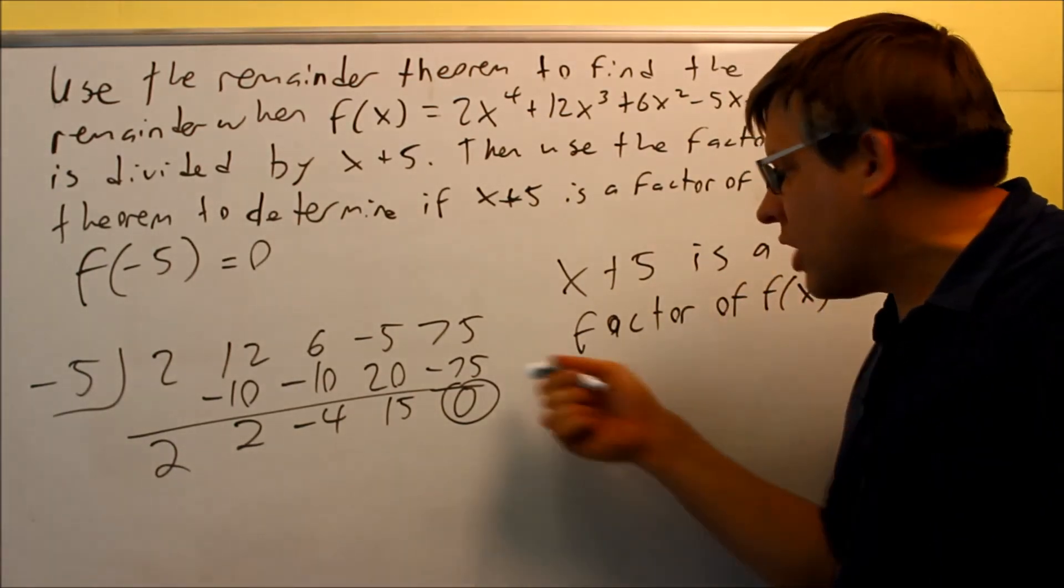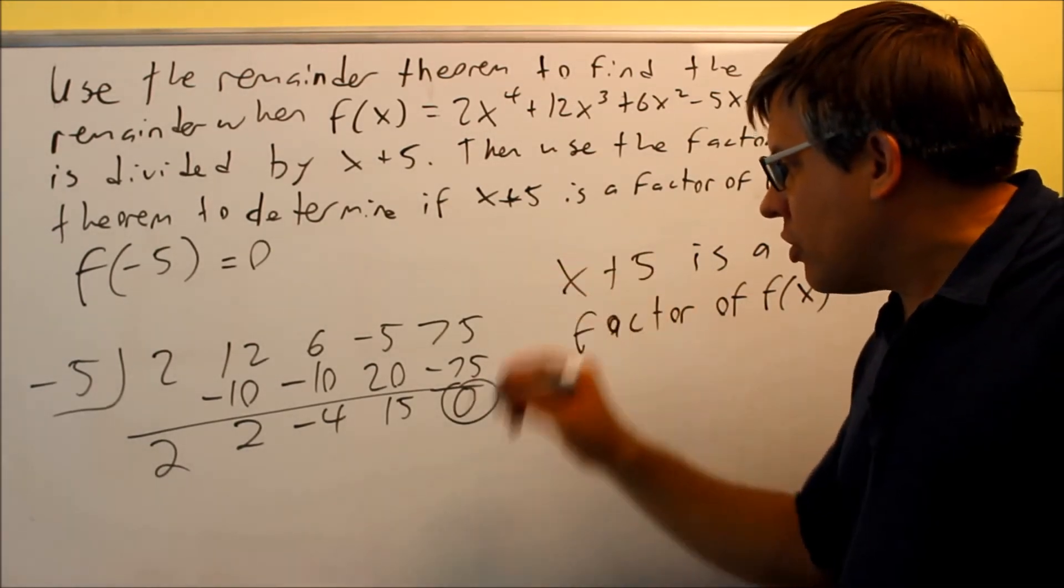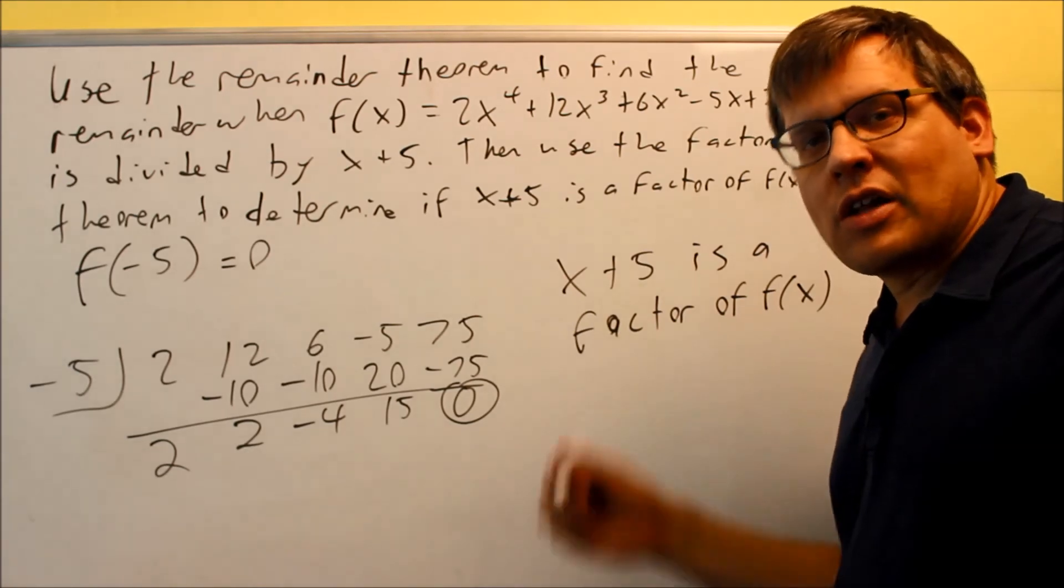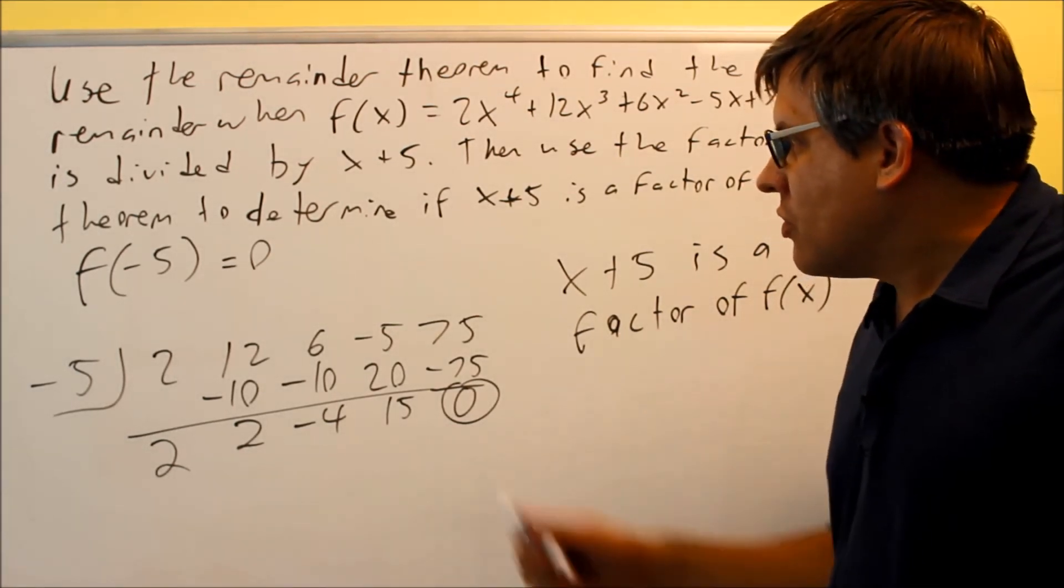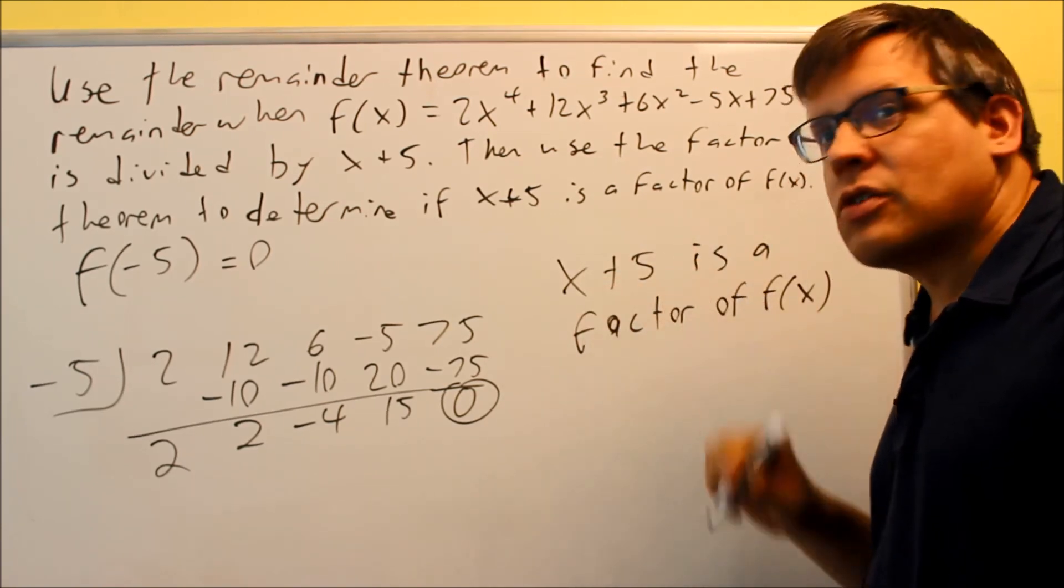And the reason why, again, is because we got a remainder of 0. That's the only way that something is a factor is when you go through the standard division and you get a 0 as a result, that tells you it definitely is going to be a factor. So 0 answers the first part and yes would answer the second part. It is going to be a factor.